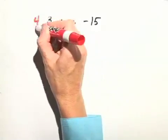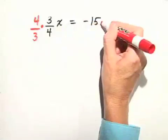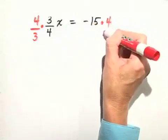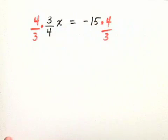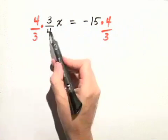So if we take the left hand side and multiply it by 4 thirds, we need to do the same thing to the right hand side. Now what happens when we multiply a number by its reciprocal?